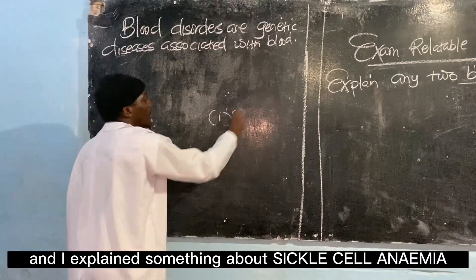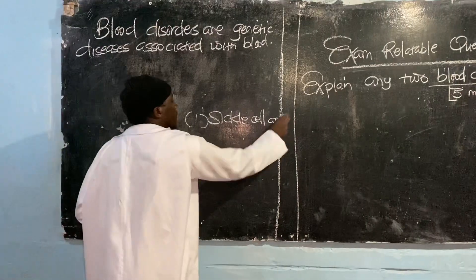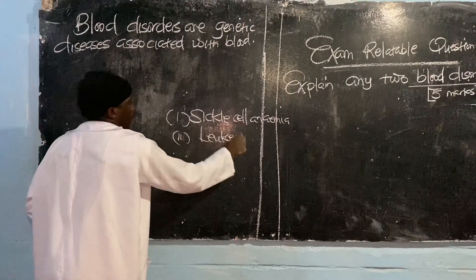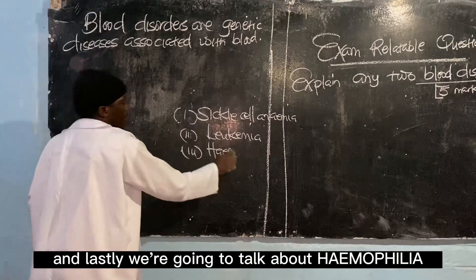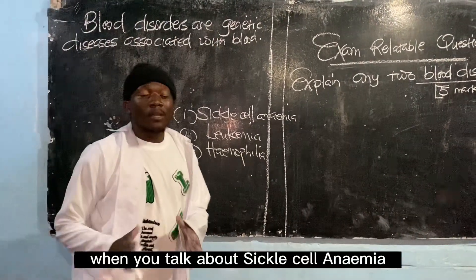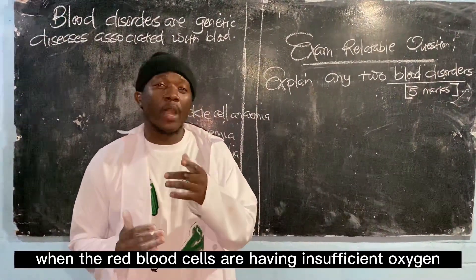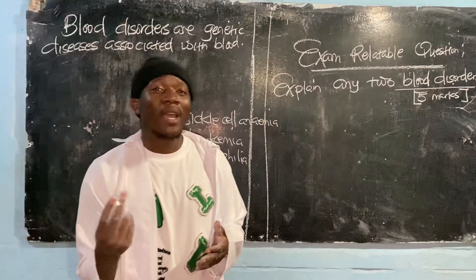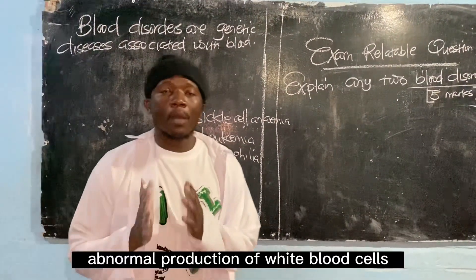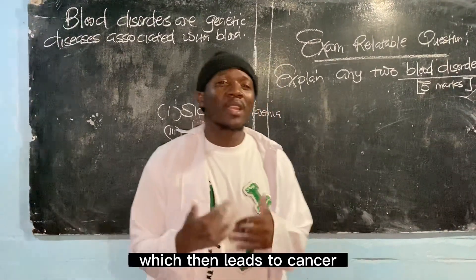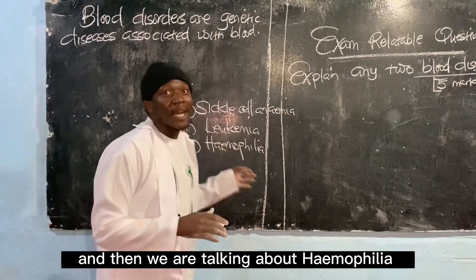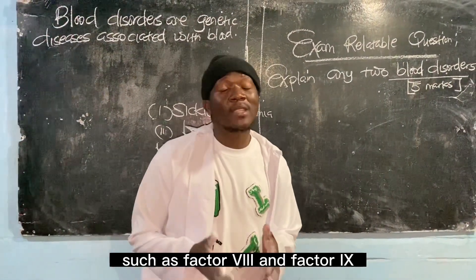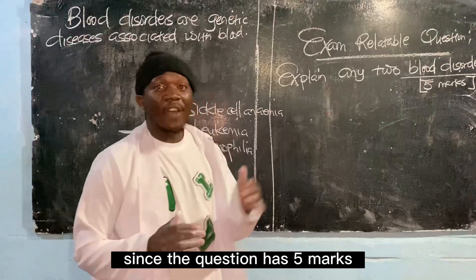Apart from defining blood disorders, you can also talk about leukemia, and lastly we are going to talk about hemophilia. When we talk about sickle cell anemia, we are talking about a condition experienced when the red blood cells have insufficient oxygen, hence attaining a sickle cell shape. Leukemia refers to abnormal production of white blood cells which leads to cancer. Hemophilia is the failure of blood to clot normally, especially due to lack of clotting proteins such as factor eight and factor nine.